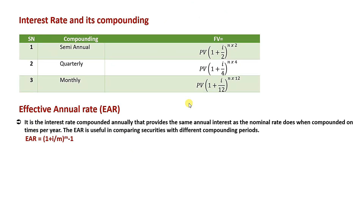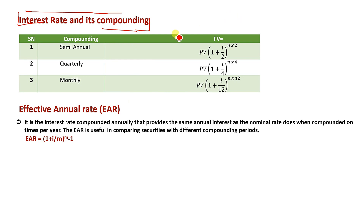Interest rate compounding. Interest rate compounding can be done annually, semi-annually, quarterly, or monthly.